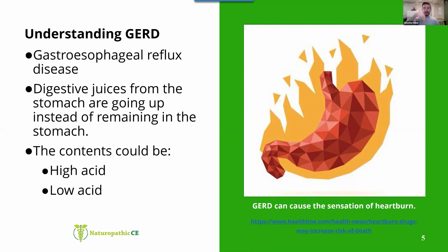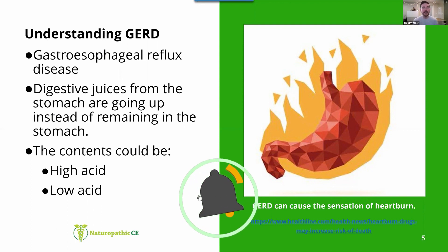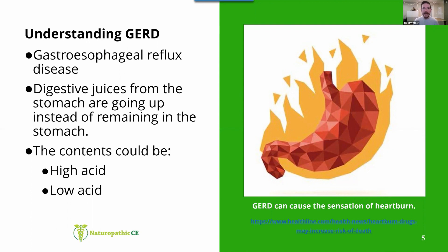And it should really only be a one-way street down. It should be going from the esophagus to the stomach, not back up. So that's what GERD stands for. As we can see on that second bullet point, digestive juices from the stomach are going up instead of remaining in the stomach and proceeding downwards.